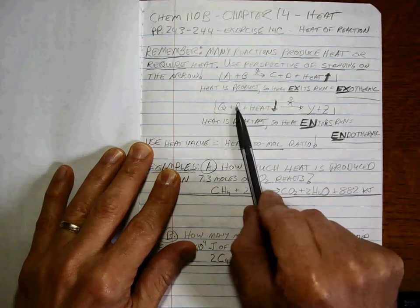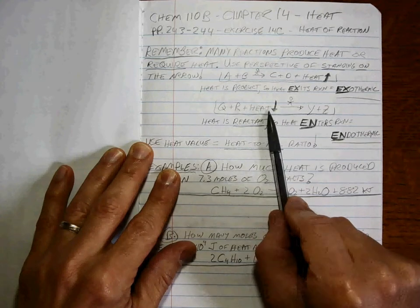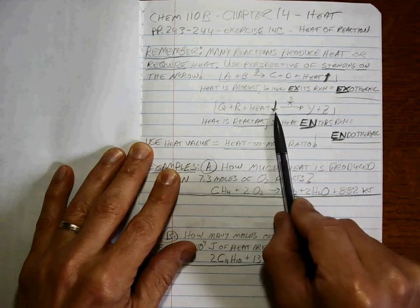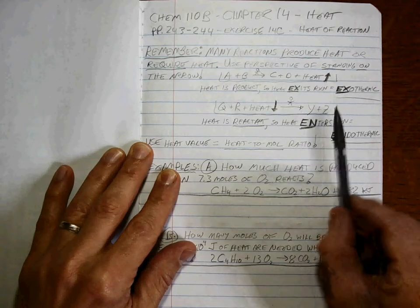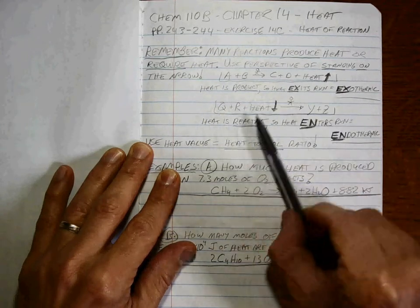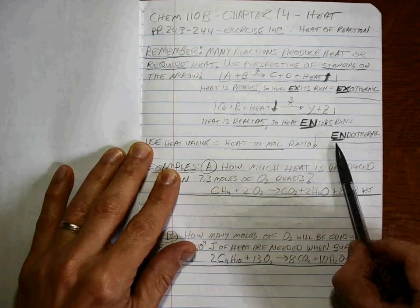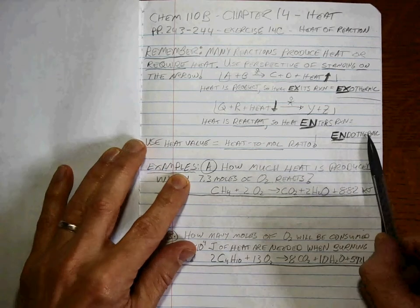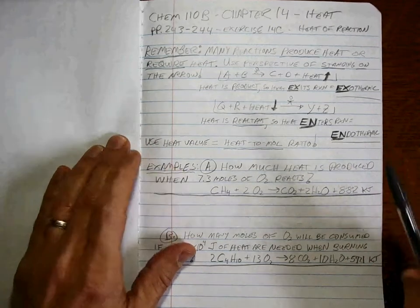If the reactants need heat from the environment to come into the reaction to make the products, then heat is a reactant and heat enters the reaction. We call that endothermic.